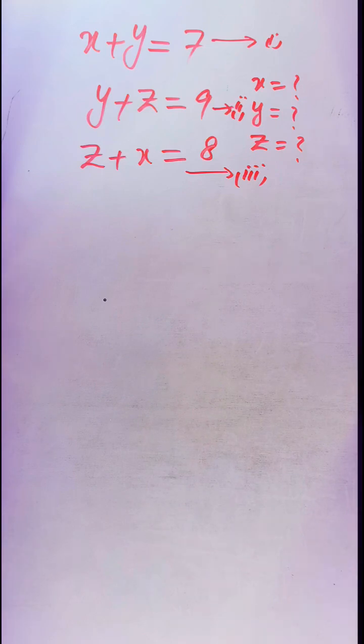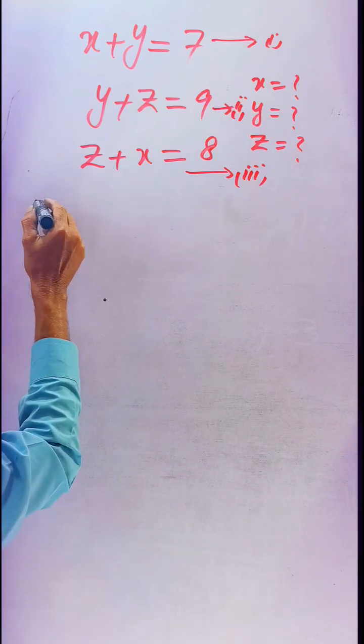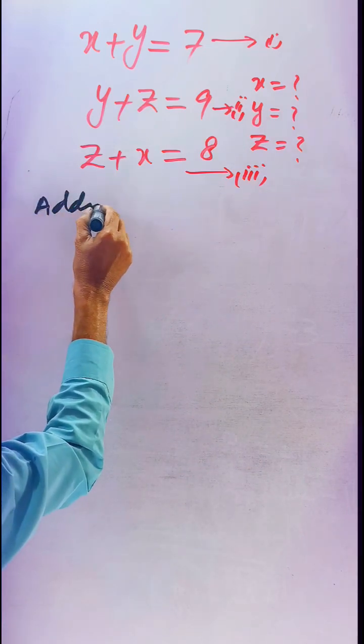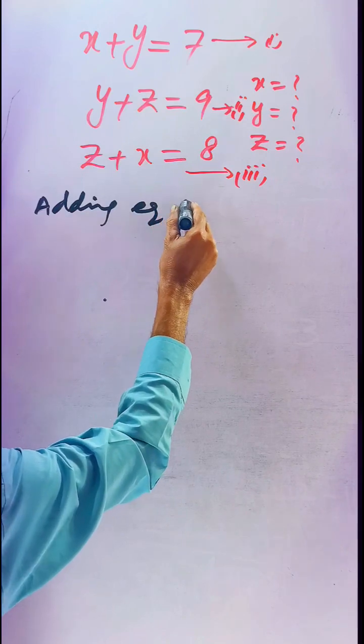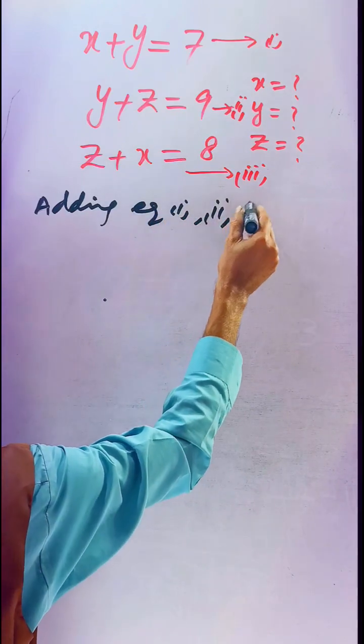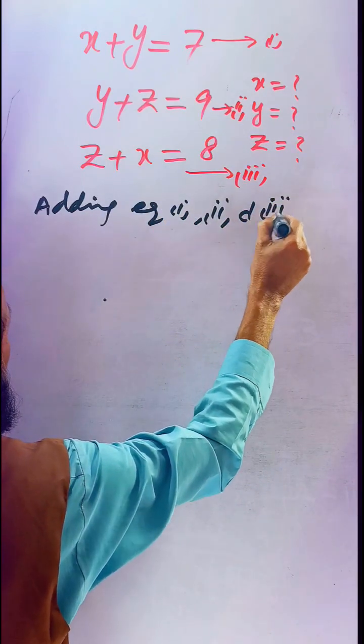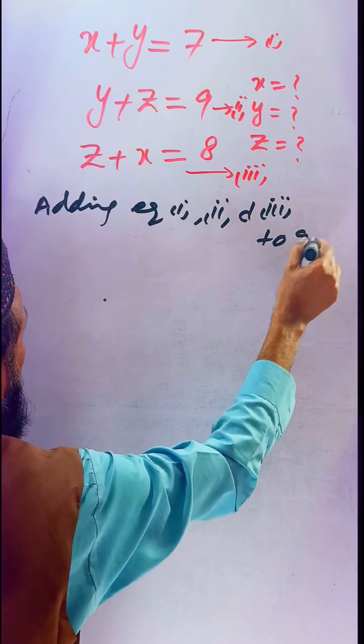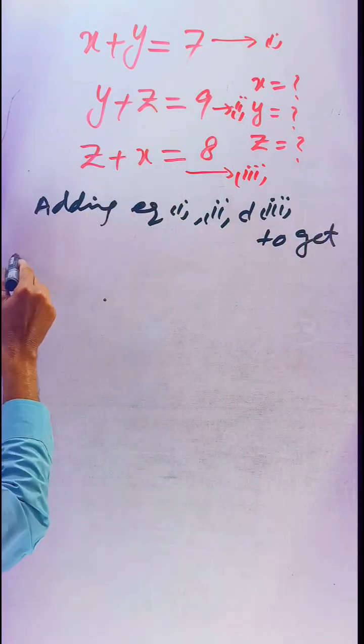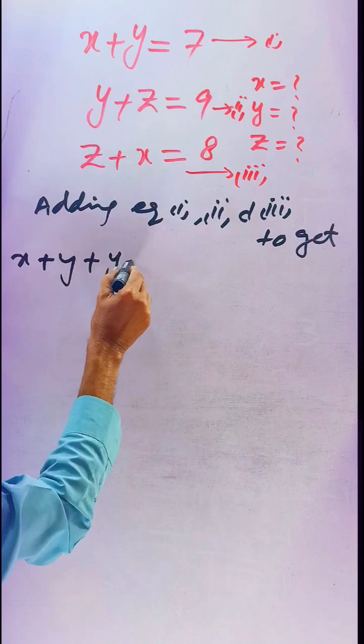Adding equations 1, 2, and 3 to get the result: x plus y plus y plus z plus z plus x equals 7 plus 9 plus 8.